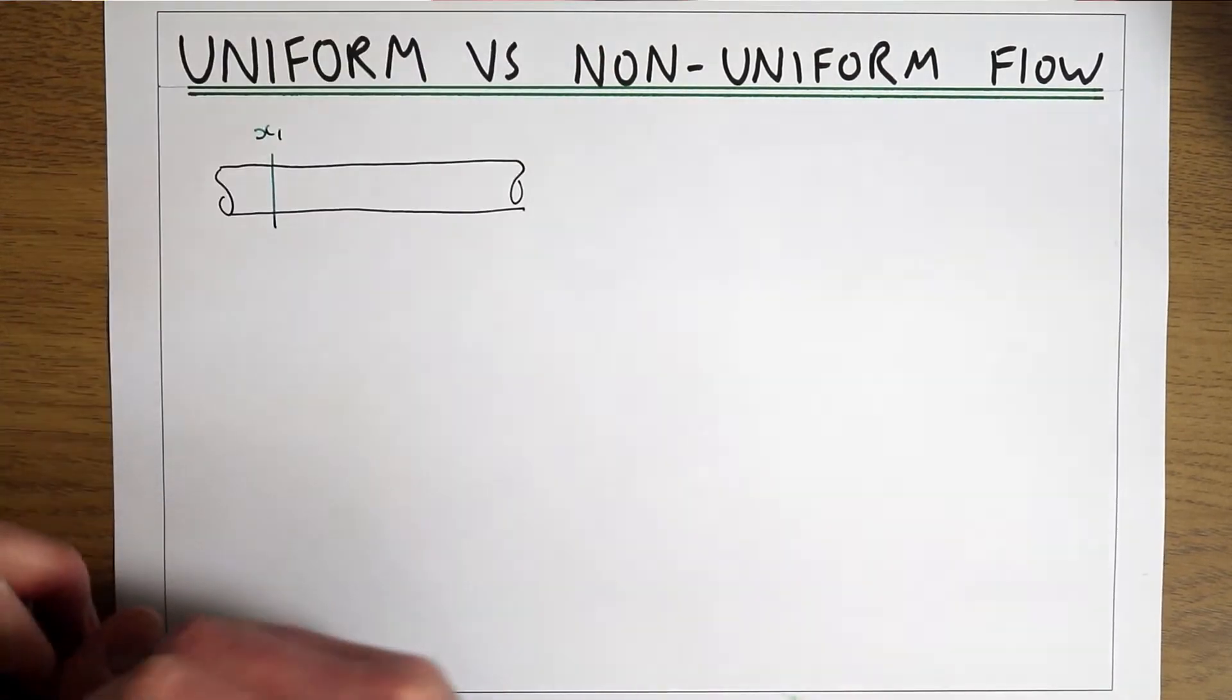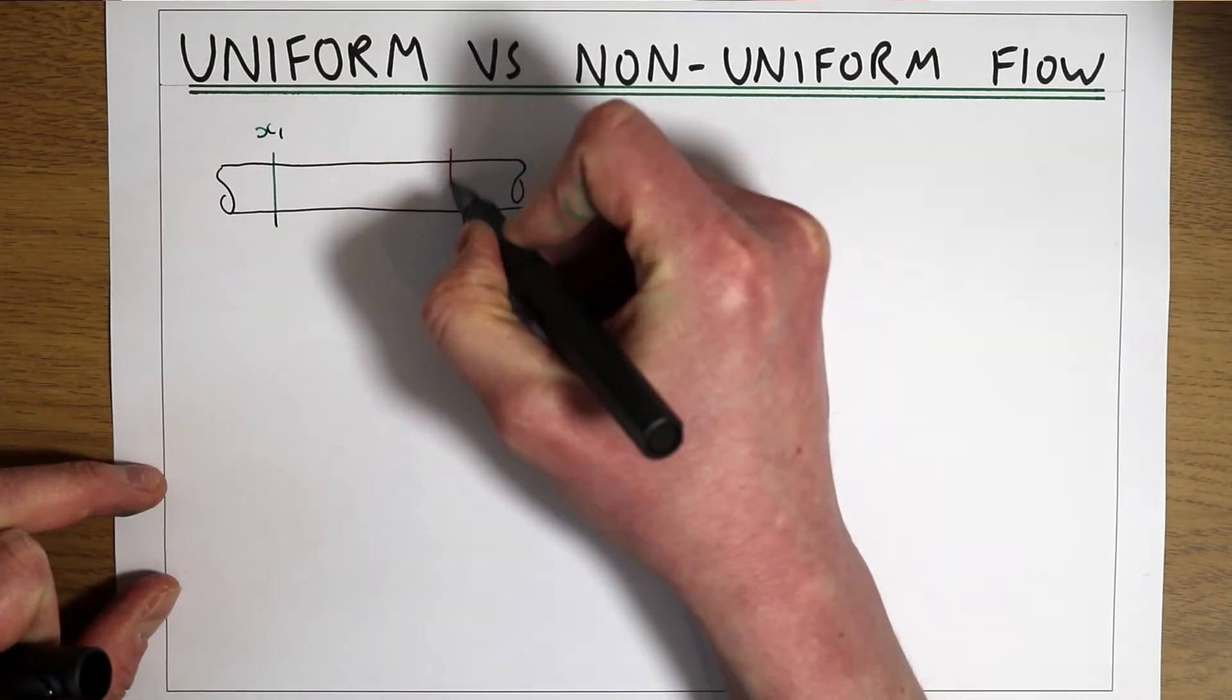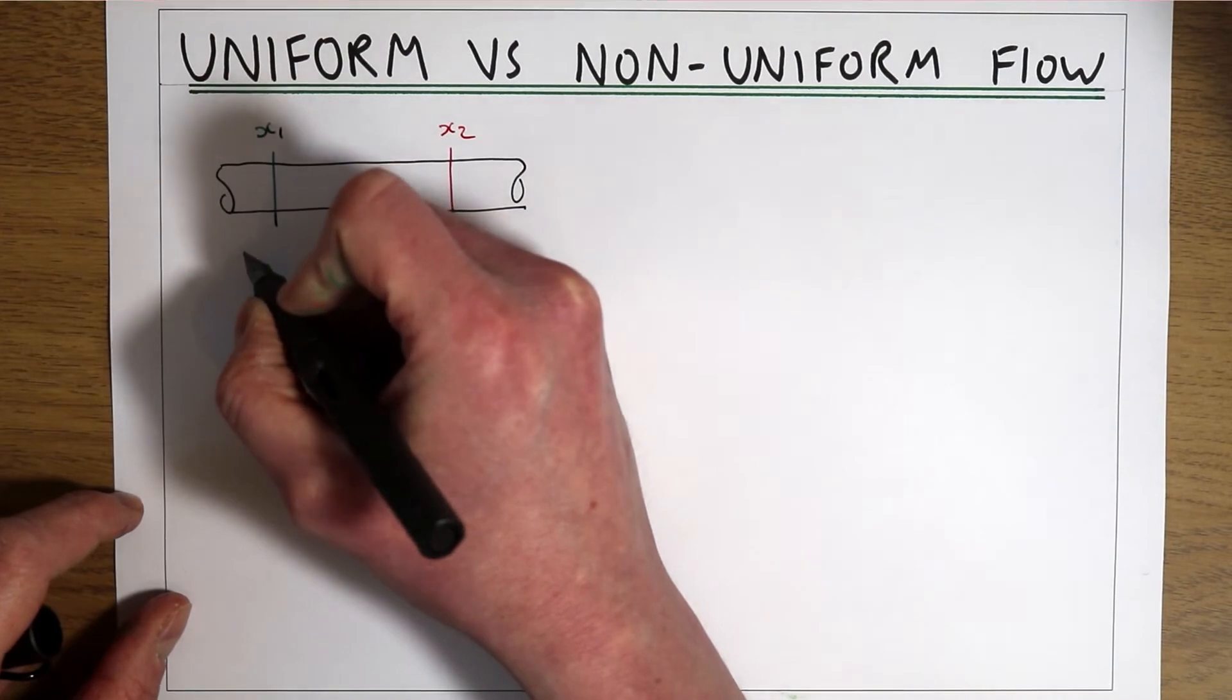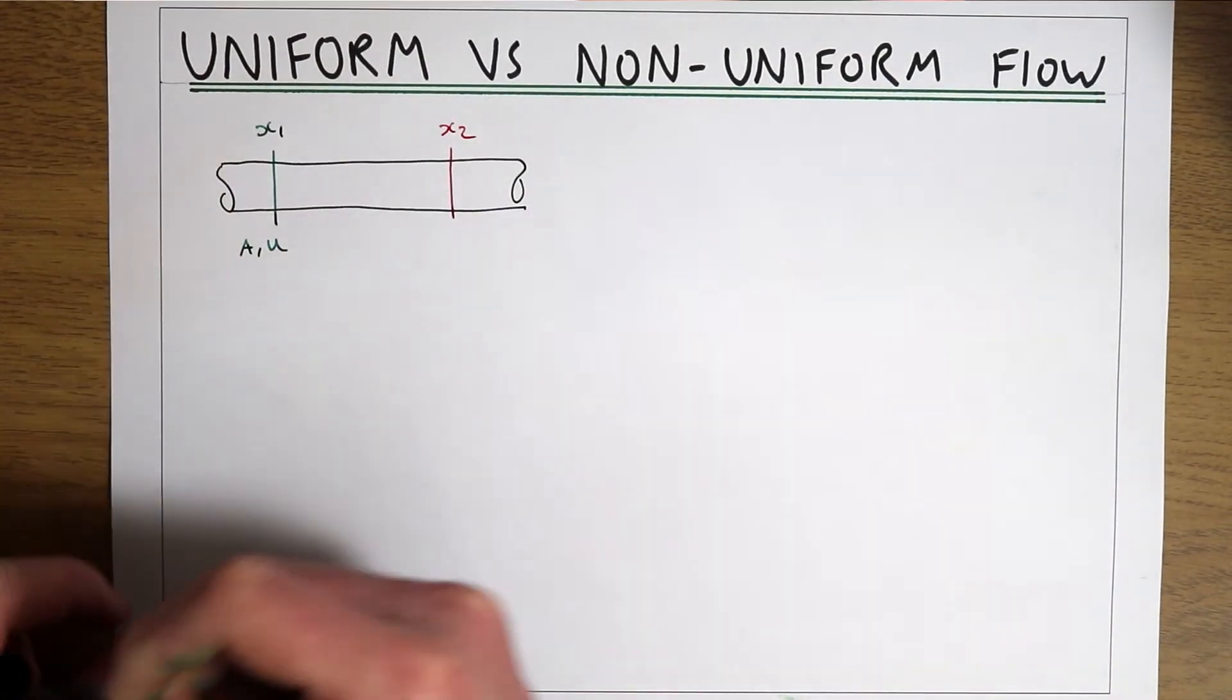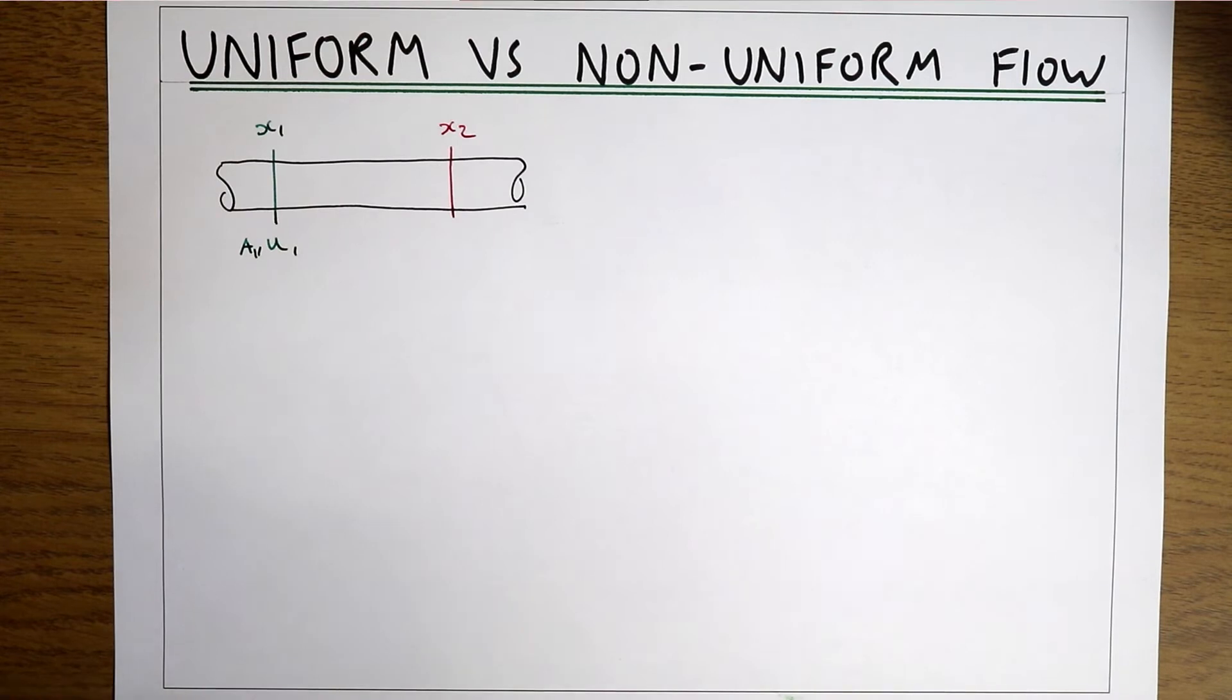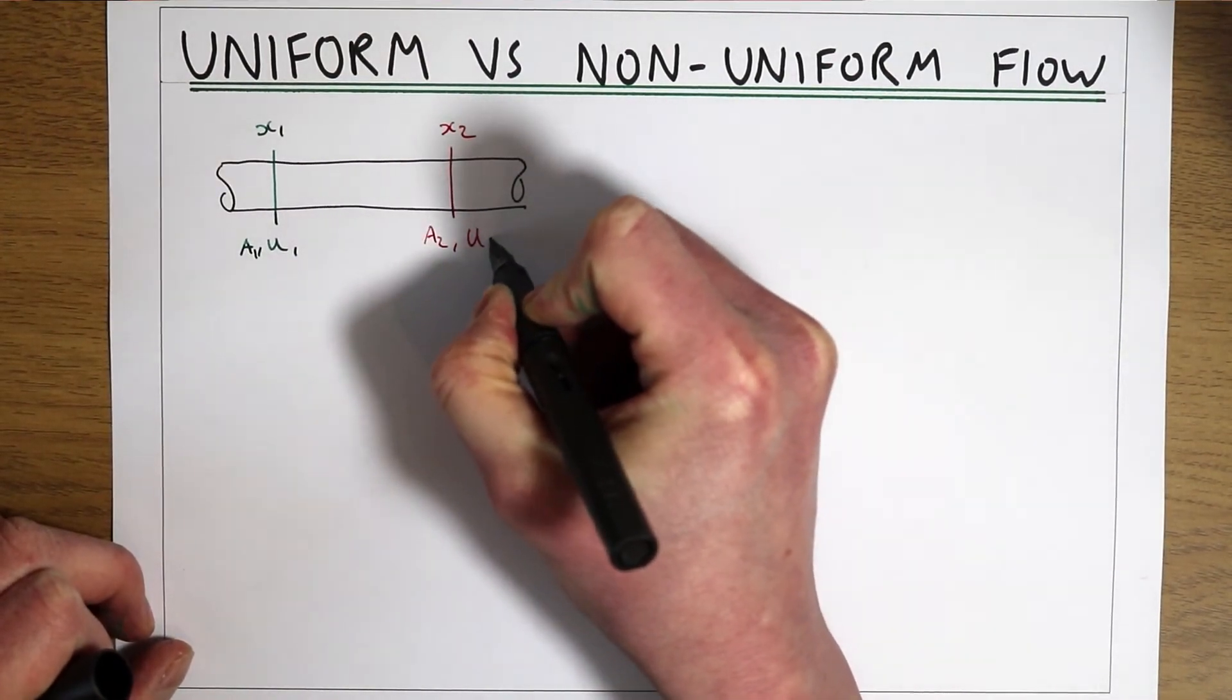So is there any variation in parameters between one point x1 in the pipe and another point x2 in the pipe? So at x1 we have an area of the flow and we have a velocity of the flow. And at x2 we also have an area of the flow and a velocity of the flow.